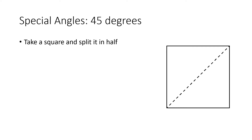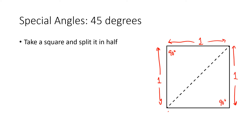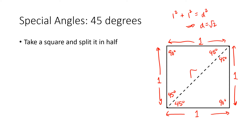Another special angle comes from taking a square and splitting it in half. All angles of a square are 90 degrees, and we'll assume the side lengths are one. When we split the square in half diagonally, that splits those 90 degree angles into 45 degree angles. Using the Pythagorean theorem, the diagonal satisfies one squared plus one squared equals the diagonal squared, which tells us the diagonal is the square root of two. So now I can figure out sine, cosine, etc. of 45 degrees using either of these two triangles.